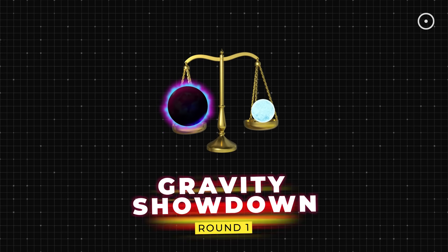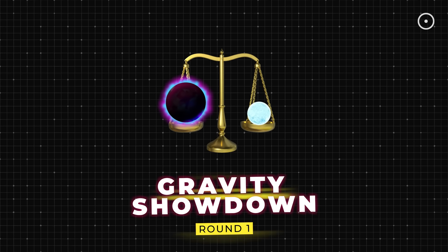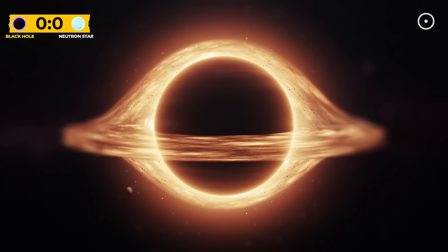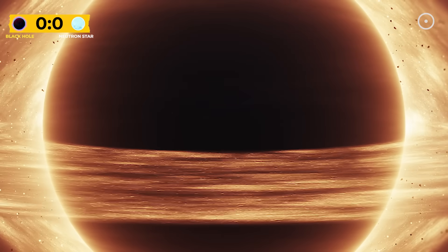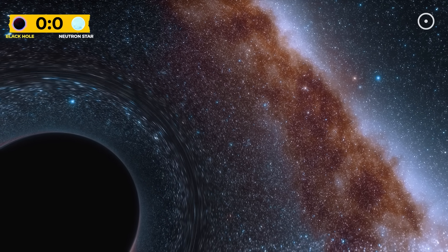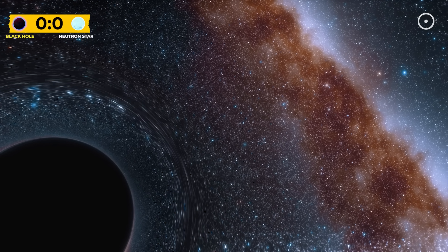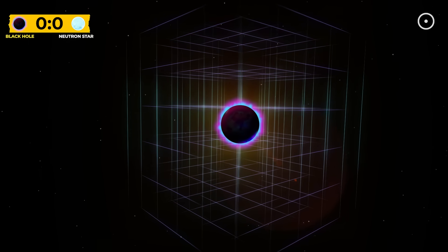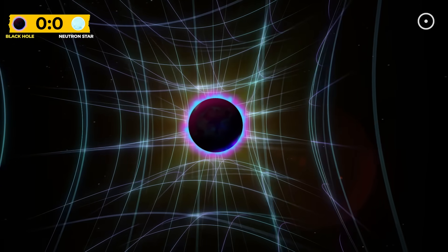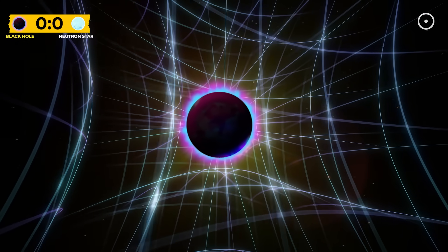First up, who has the strongest gravitational pull? Black holes have something called an event horizon. Think of it as nature's point of no return. Once you cross this invisible boundary, not even light can escape. The gravity is so intense it literally warps the fabric of space-time itself. Imagine stretching a rubber sheet and dropping a bowling ball on it. That dent. That's what a black hole does to the universe.